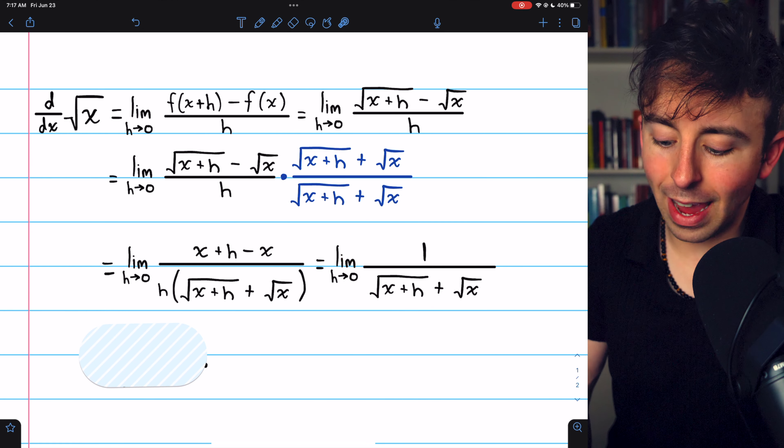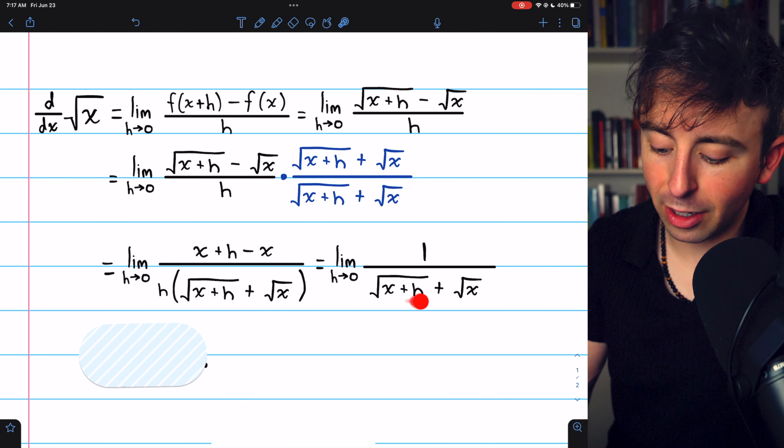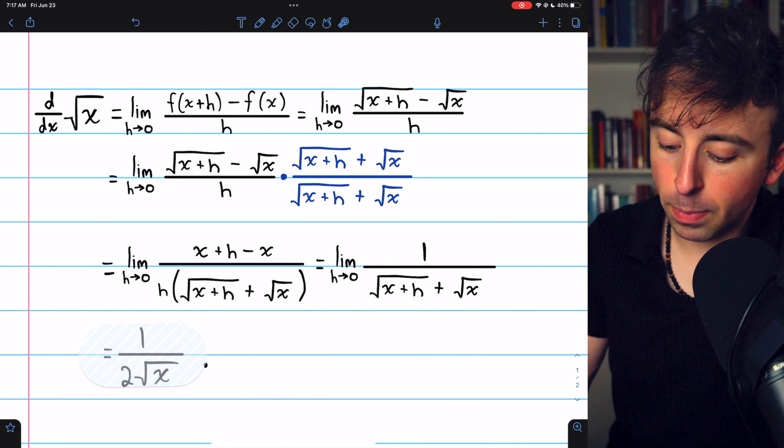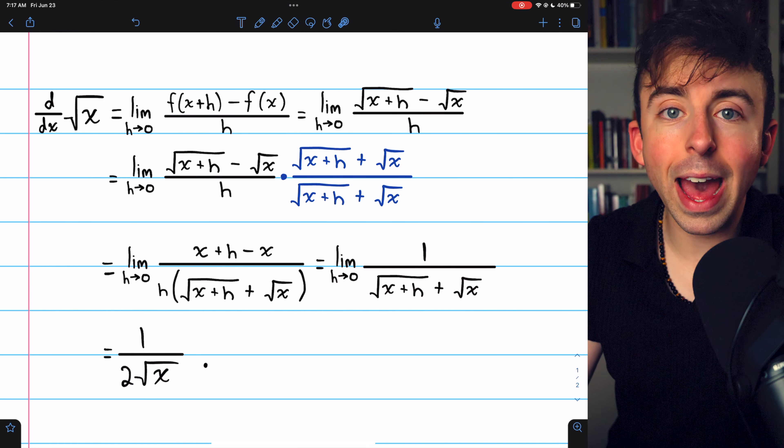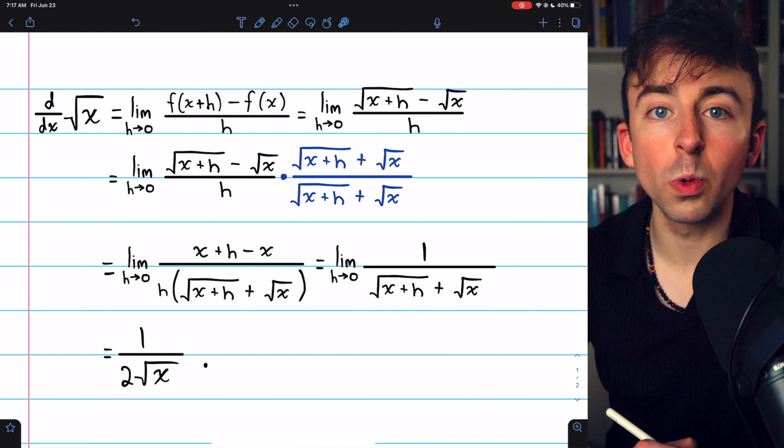So we now have the limit as h approaches zero of one over the square root of x plus h plus the square root of x. At this point, we can just plug in zero for h. Plugging in zero for h, the denominator is just root x plus root x, so the limit is one over two root x.